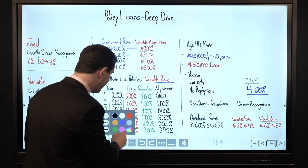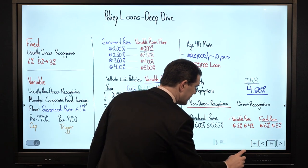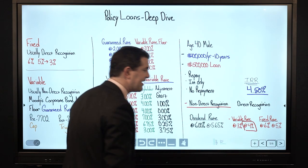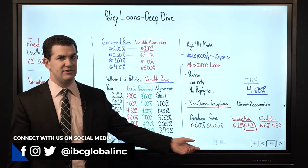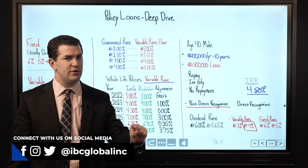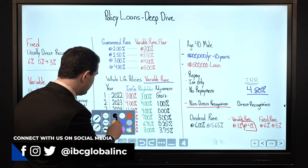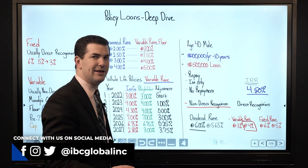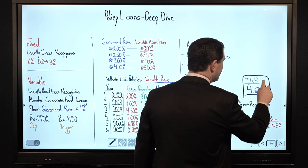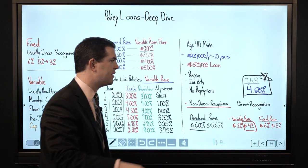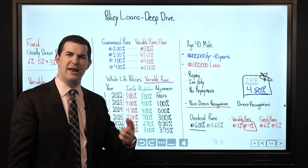With the variable loan rate, the policy is non-direct recognition, so the only difference in this example is we've got a higher cost to borrow. We can see what my total out-of-pocket and interest cost are, and also measure the cost to borrow and my internal rate of return. The dividend rate is not my net internal rate of return — it's not my net growth rate of 4.5%. It's closer to the average; the annual IRR will top out closer to 5% but it takes some time to pick up.